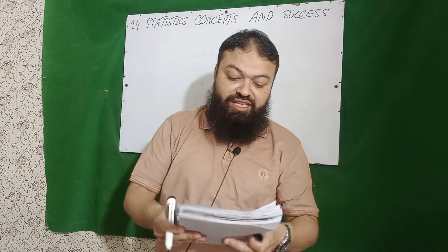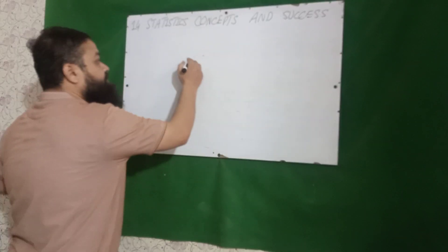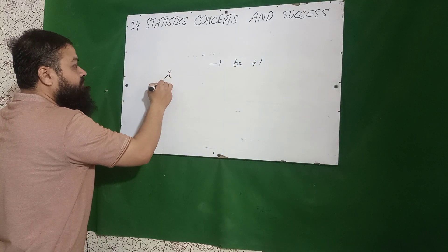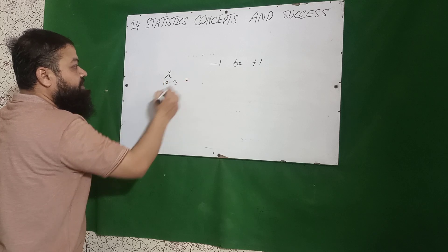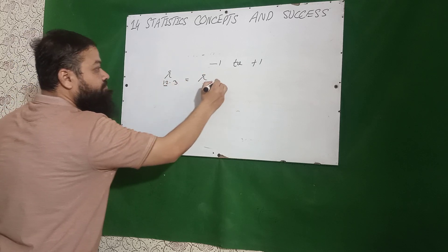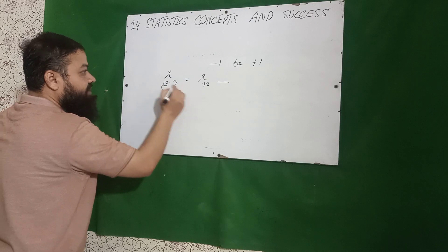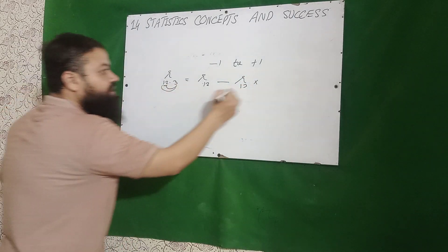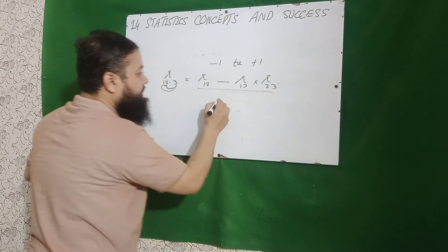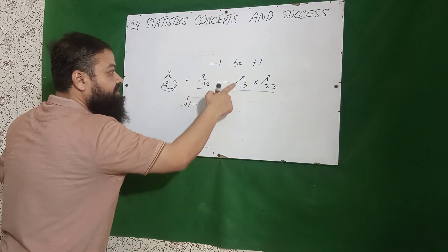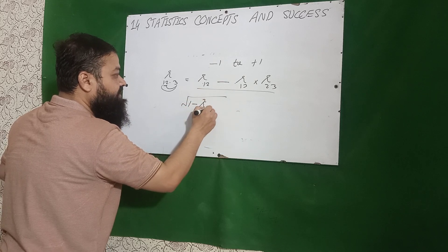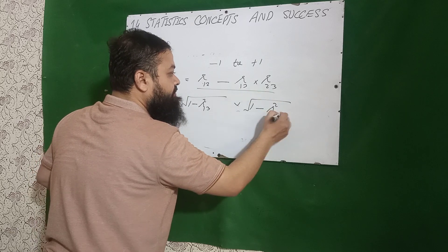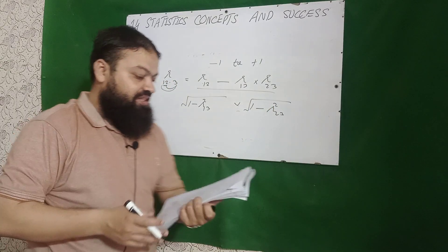The partial correlation coefficient has a range of minus 1 to plus 1. The formula is: r₁₂.₃ equals r₁₂ minus r₁₃ times r₂₃, divided by the square root of (1 minus r²₁₃) multiplied by the square root of (1 minus r²₂₃).